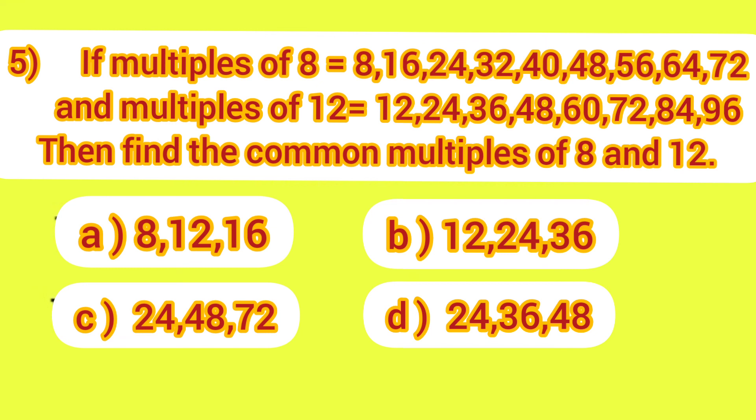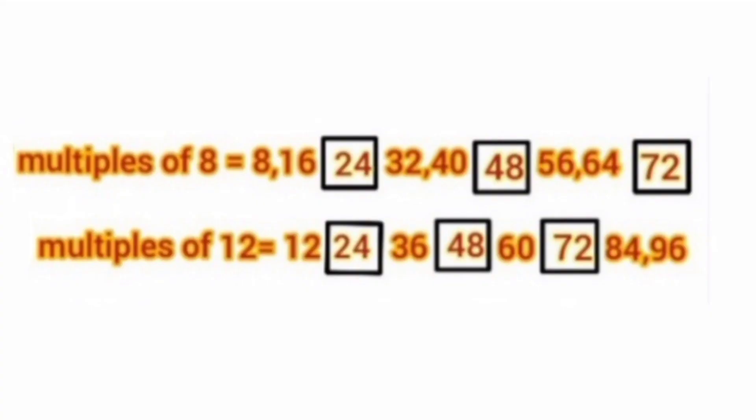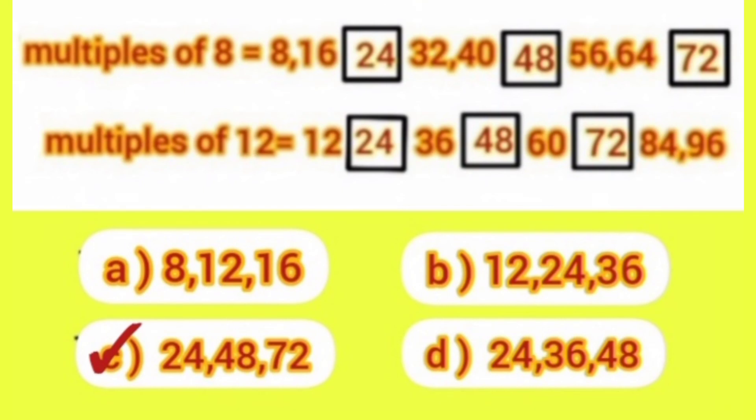In this question, we have to find those multiples which are the same in both 8 and 12. That is 24, which is included in multiples of both 8 and 12, then 48 and 72. So our correct answer is option C.